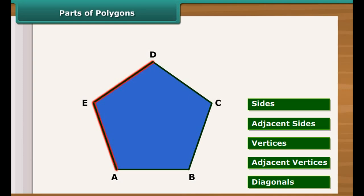The meeting point of a pair of sides is called its vertices. Here A, B, C, D and E are the vertices of given polygon.